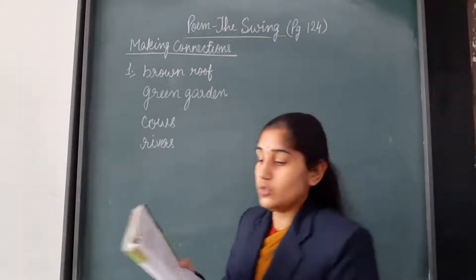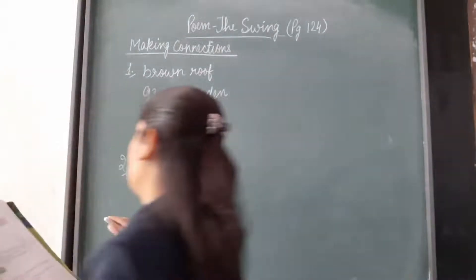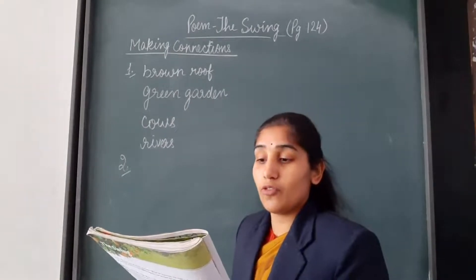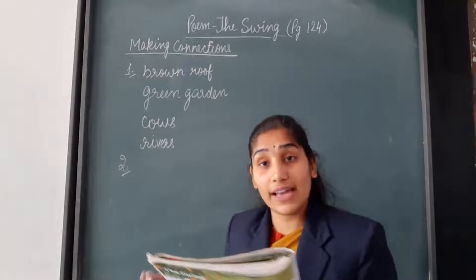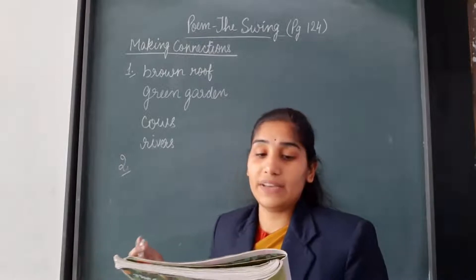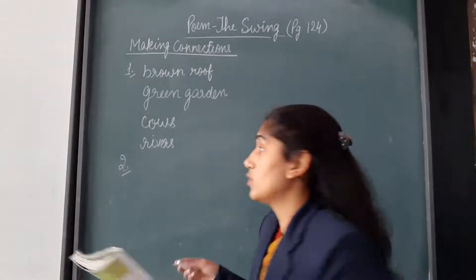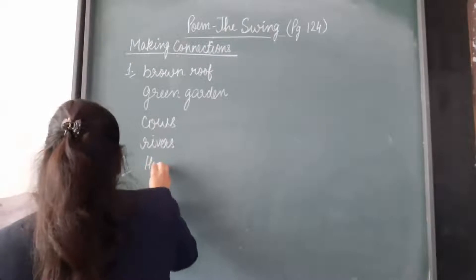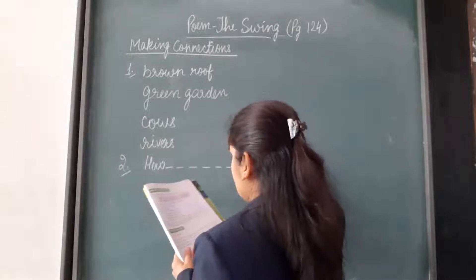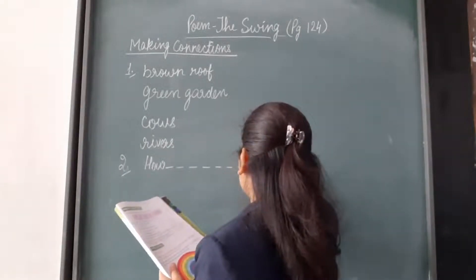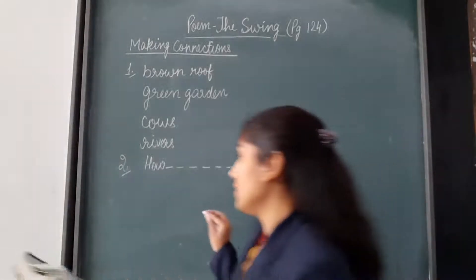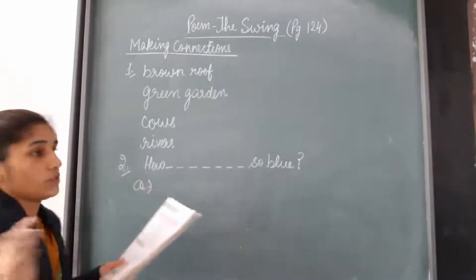Now we will move to question number 2. Question number 2 is: read these lines and answer the question as follows. So children, here are some lines given to us: 'How do you like to go up in a swing, up in the air, so blue?' So children, you will write down these lines in your copy.